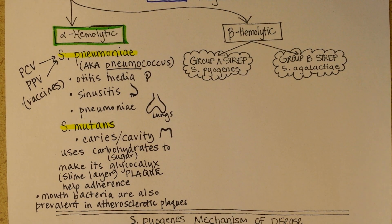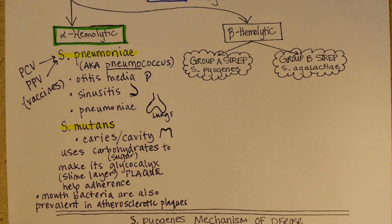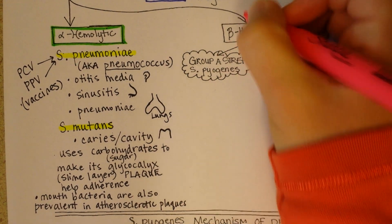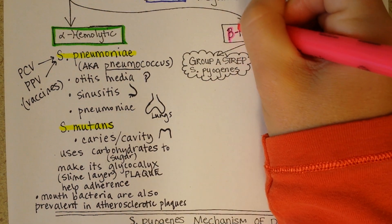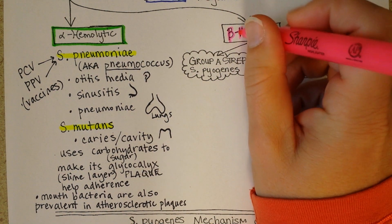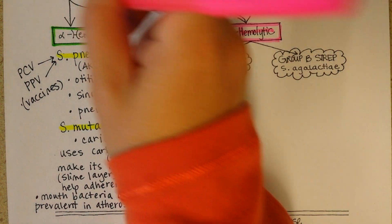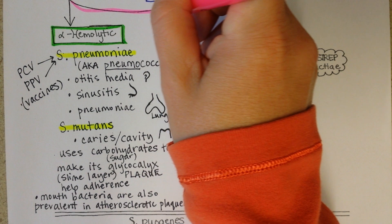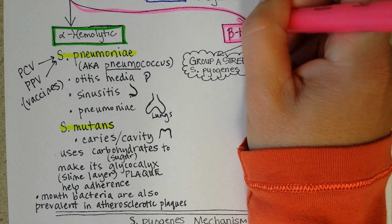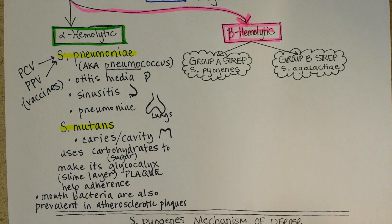On to Streptococcus, part two. Now we're going to look at a couple of famous beta hemolytic streptococcus species. I'm going to use a pink pen for beta hemolytic. This means that they can destroy red blood cells, and we can test this on blood agar in a petri plate, and you see white clearings where the red blood cells were, which is evidence of the damage.